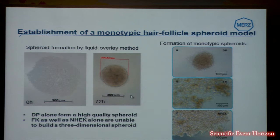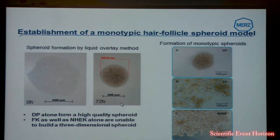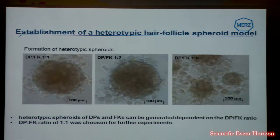We used the so-called liquid overlay method to form spheroids. We covered the wells with agarose to avoid cell attachment, centrifuged them to bring them into close contact, and after 24 to 72 hours, a nice spheroid is formed. Using our DP cells, spheroid formation is possible, but using our follicular keratinocytes or interfollicular keratinocytes, no spheroid formation could be observed.